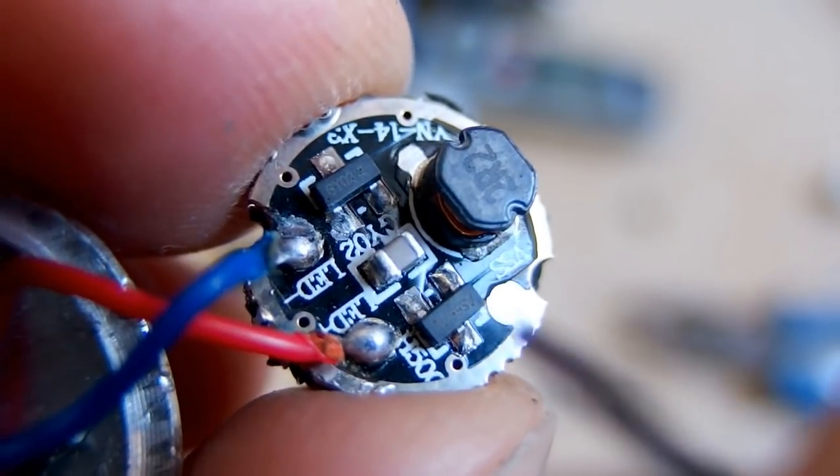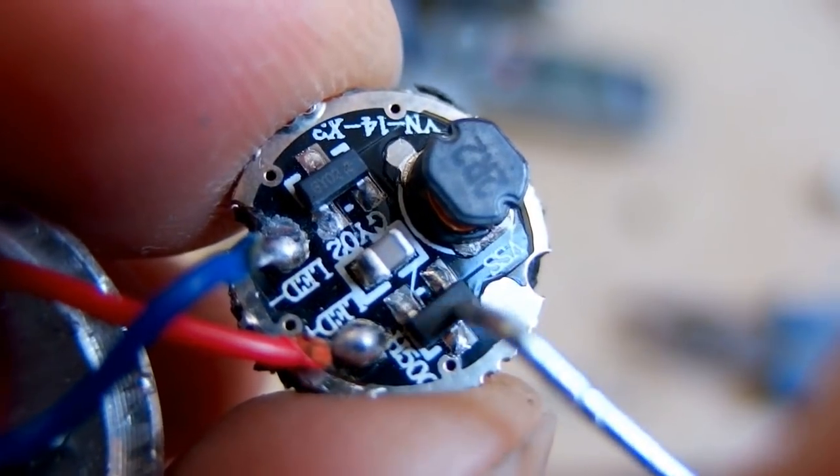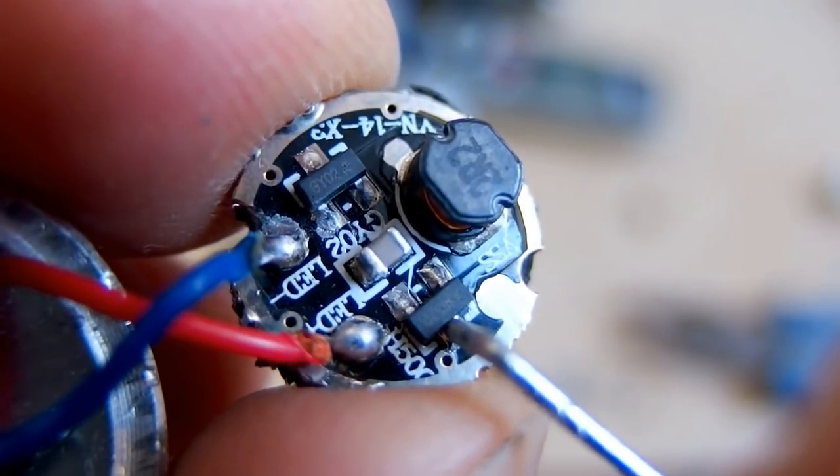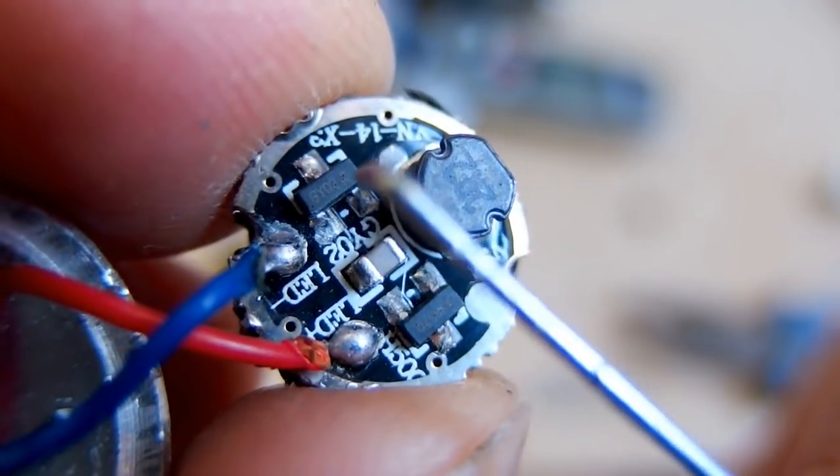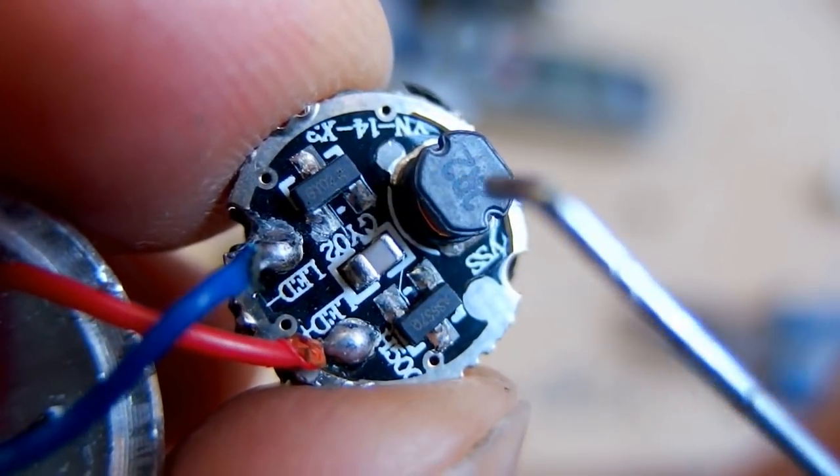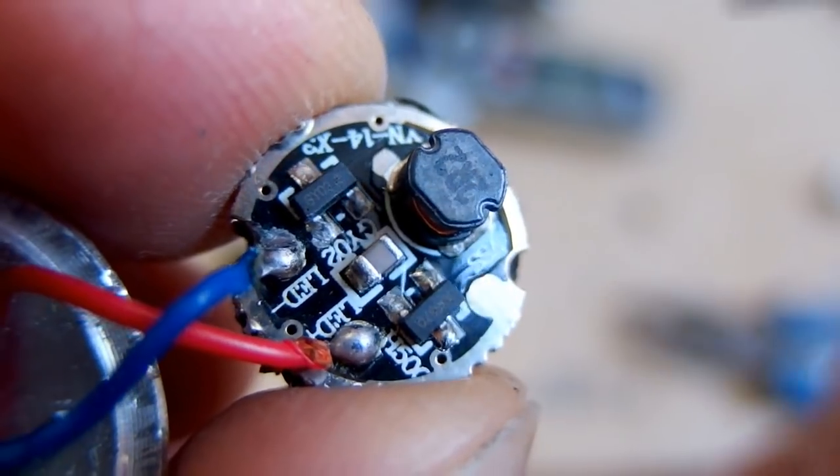So one of the chips is probably the mode controller, switching the high power, low power, and flashing mode. And the other chip is probably a boost inverter driving this inductor.